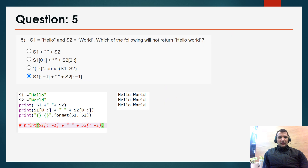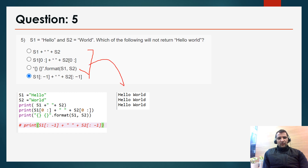Question 5: s1 is equal to 'hello' and s2 is equal to 'world'. Which of the following will not return 'hello world'? When I executed all the commands in Spyder IDE, options a, b, and c all return 'hello world'. However, command d — s1[:-1] + s2[:-1] — does not return 'hello world'. So the correct option is d.